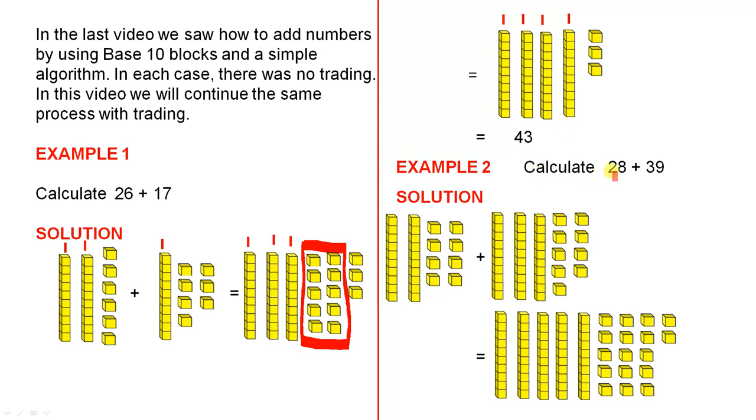Example 2, calculate 28 plus 39. The solution, 2 tens and 8 singles. There are the 2 tens and there are the 8 singles. 39, there are the 3 tens and there are the 9 singles. Now when we add all those tens together, there are 5 of them, 1, 2, 3, 4, 5.